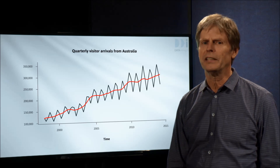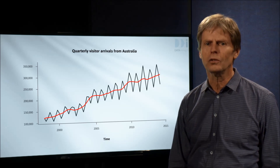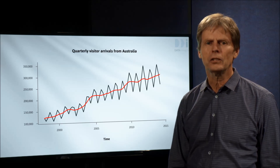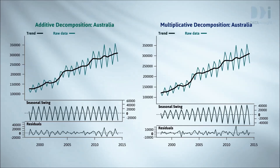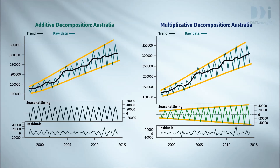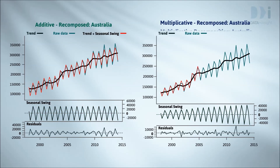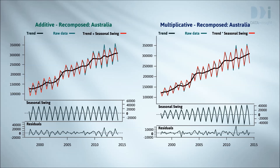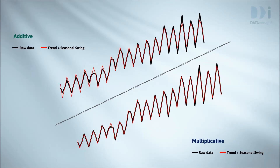We'll look at the results when we do an additive and a multiplicative decomposition of the Australian series in Inzite. The multiplicative decomposition on the right is obviously a better reflection of what we see. Looking at the top panels from Inzite's recomposition facility, we can contrast what is predicted by trend plus seasonal swing against the actual series in both cases. The multiplicative one is clearly doing much better — the additive one is swinging too widely at the left hand side and not widely enough on the right.